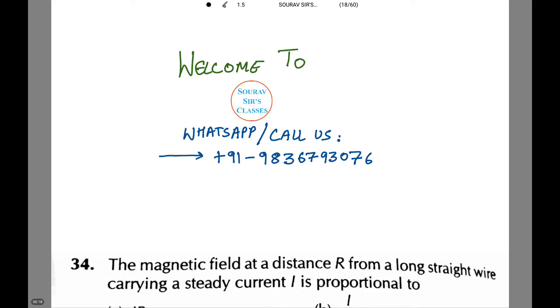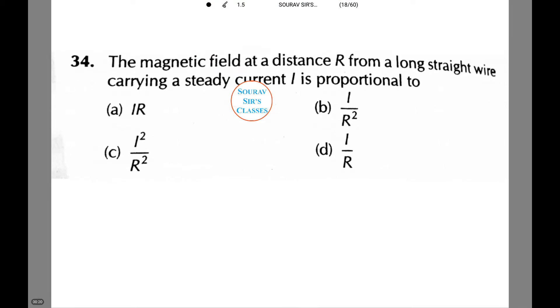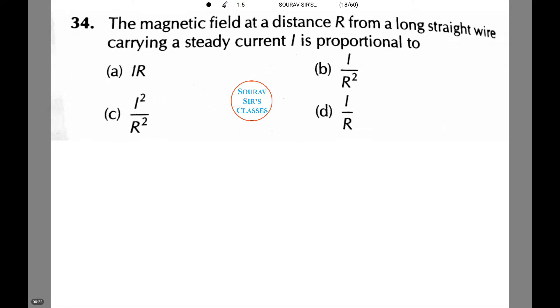Let's see our first sum. The magnetic field at a distance R from a long straight wire carrying a steady current I is proportional to...